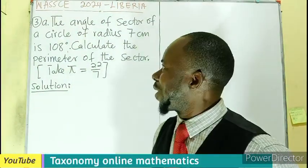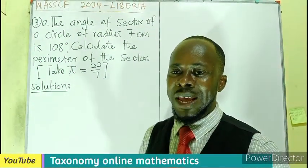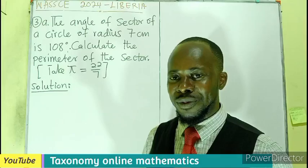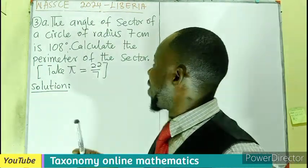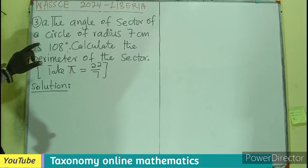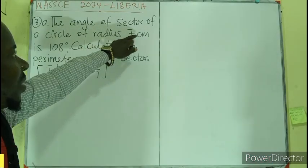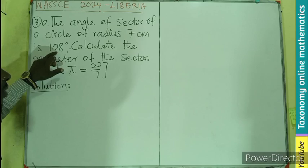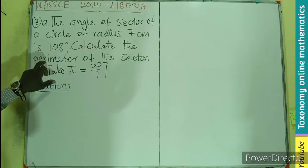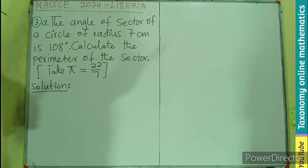Hello, welcome to question number three, WASI 2024 Liberia edition. The angle of a sector of a circle of radius 7 centimeters is given as 108 degrees. You have to calculate the perimeter of the sector.